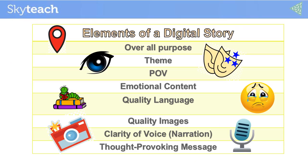Let's see what the elements of a digital story are. The very first thing is the overall purpose. Once it is selected, the learners can extract themes for development of the digital story. For example, if the overall purpose is an awareness campaign, then the student can find out what social issues can be projected.